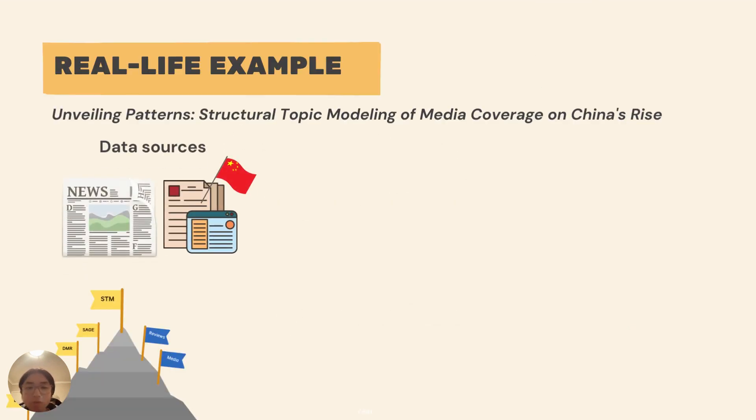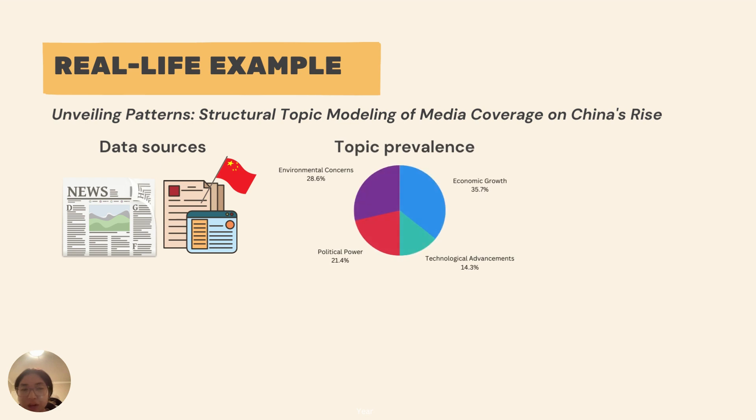All right, so one real-world application for STM is the media coverage of China's rise. STM has been used to analyze how global media represents China's economic growth. The correlated topics feature of STM allows the model to detect relationships between different aspects of the coverage, such as economic growth, political changes, and cultural impact.